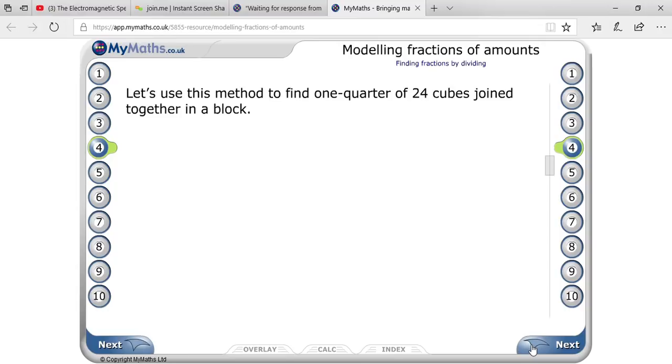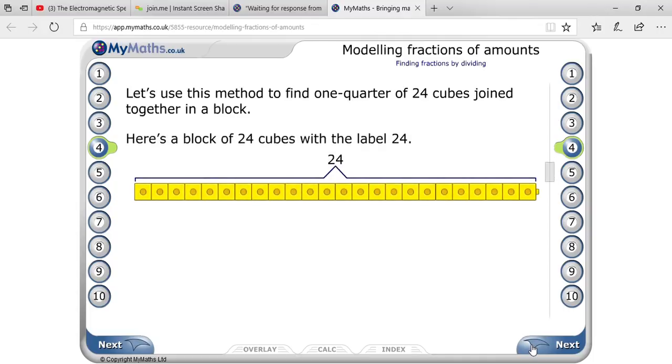We can take one more example. Suppose you have to find one-quarter of 24 cubes joined together. First of all, there are 24 cubes. We have to count all the cubes. They are saying find one-quarter.